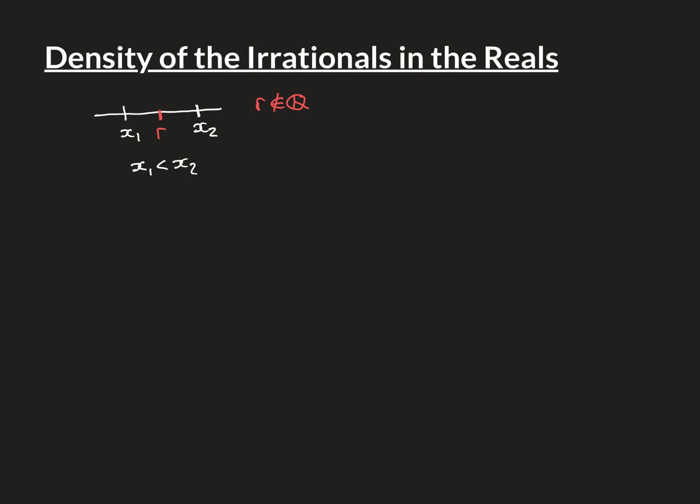Let's now prove this. We'll split it into cases. The first case: let x1 itself be an irrational real number. I don't actually need to split into sub-cases for x2 — it doesn't matter whether x2 is rational or irrational. This strategy will work to produce an irrational number between the two in both cases. So we just have the assumption that x1 is not a rational real number.